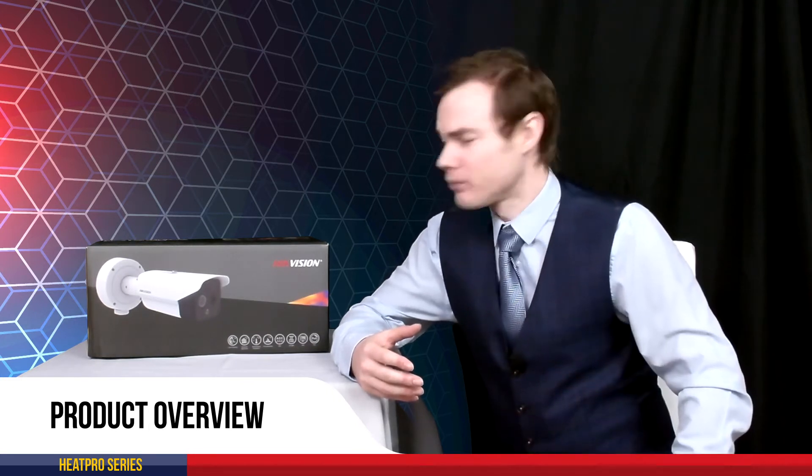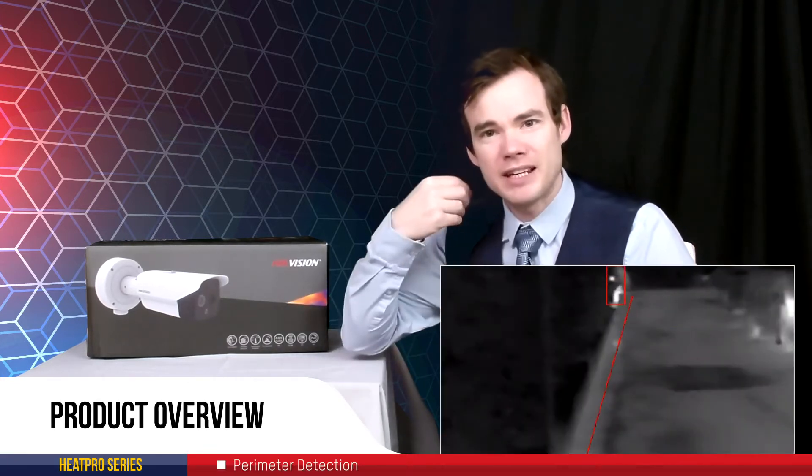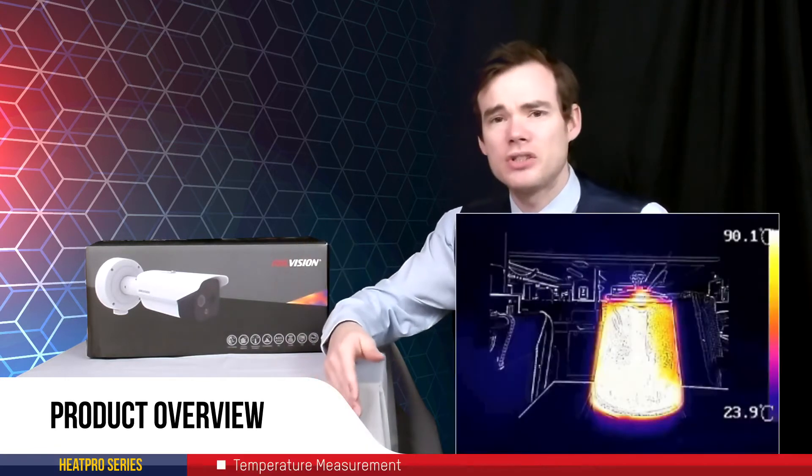Now this camera here does have a thermal and an optical lens as well. It's got the thermal lens to detect the electromagnetic radiation in the scene, therefore giving us the ability to trigger things such as line crosses, intrusion detections, and also measure bodies of temperature in a scene.